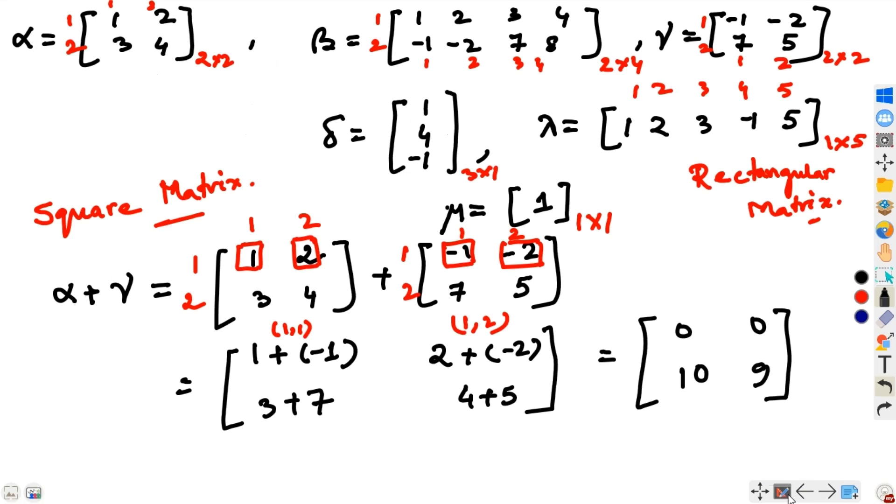Not only this, you can multiply any matrices, beta, gamma, lambda or whomever you want by any scalar number. And the procedure is just like this. For example, if you multiply delta with 3, then this is just like 1 times 3, 4 times 3, minus 1 times 3. Let us move on to subtraction of matrices.